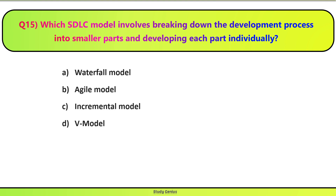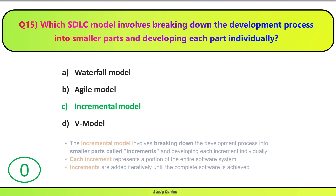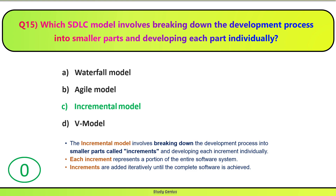Question 15. Which SDLC model involves breaking down the development process into smaller parts and developing each part individually? Konse SDLC model mein development process ko smaller parts mein break kiya jata hai, aur each part ko individually develop kiya jata hai — Waterfall model, Agile model, Incremental model, ya V model? Correct answer is C. Incremental model involves breaking down the development process into smaller parts called increments and developing each increment individually. Each increment represents a portion of the entire software system, and increments are added iteratively until the complete software is achieved.